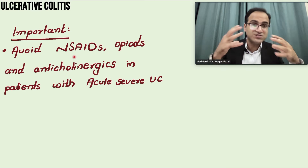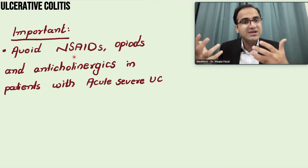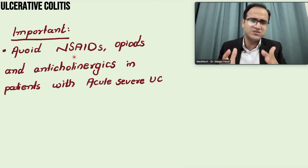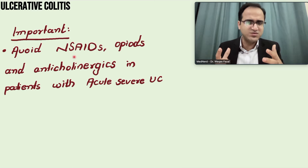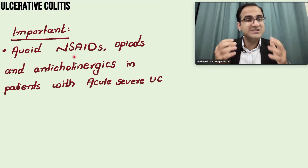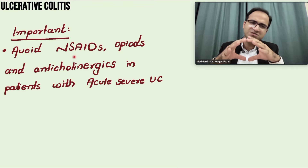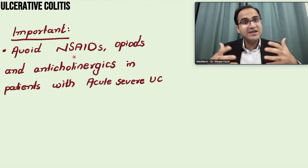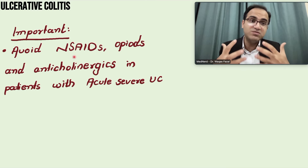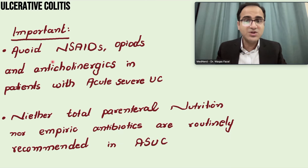Avoid NSAIDs, opiates, and anticholinergics in patients with acute severe ulcerative colitis. NSAIDs inhibit prostaglandins, which are important for the protective lining and healing process in the gut. Opiates and anticholinergics decrease gut motility, and especially in patients with toxic megacolon this results in constipation, increased tenesmus, feeling of incomplete evacuation, and abdominal cramps.